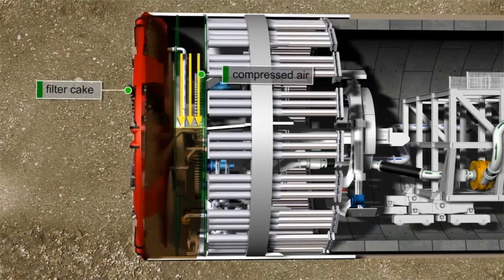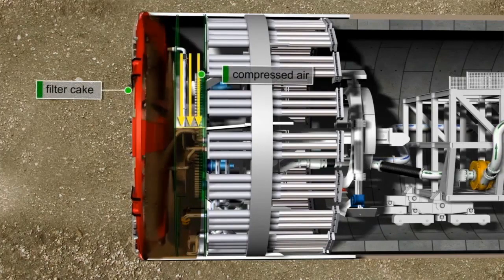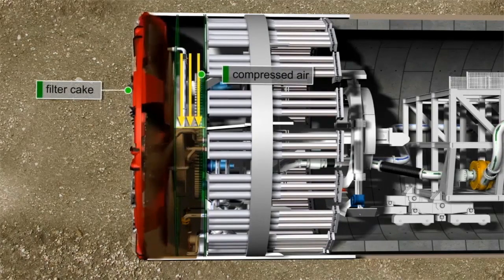A filter cake is generated ahead of the cutting wheel by pressurizing the bentonite in the working chamber with compressed air.